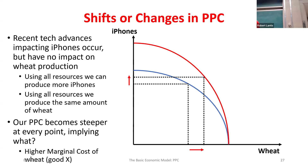Now let's say a scientist in the biology building comes up with a new pesticide for crops that allows more of the harvest to be usable — a technology change that impacts the amount of wheat we can produce. But pesticides don't impact the quantity of iPhones we can produce at all. So we might initially start with a production possibilities curve, and now with this new pesticide, if we're only producing wheat we can produce a larger amount, but it has no impact if we're only producing iPhones.